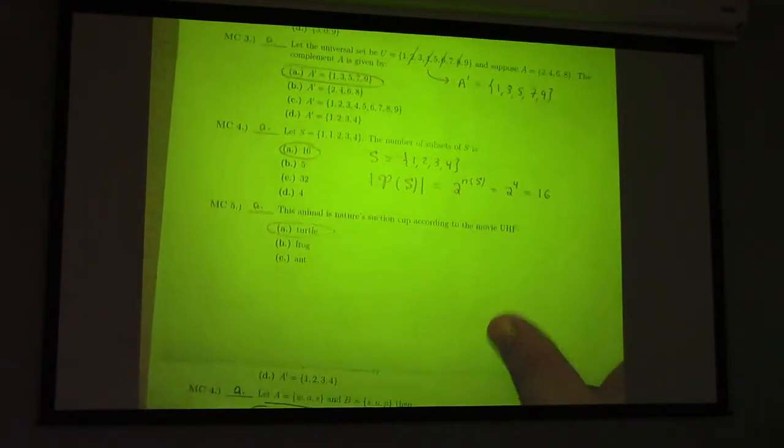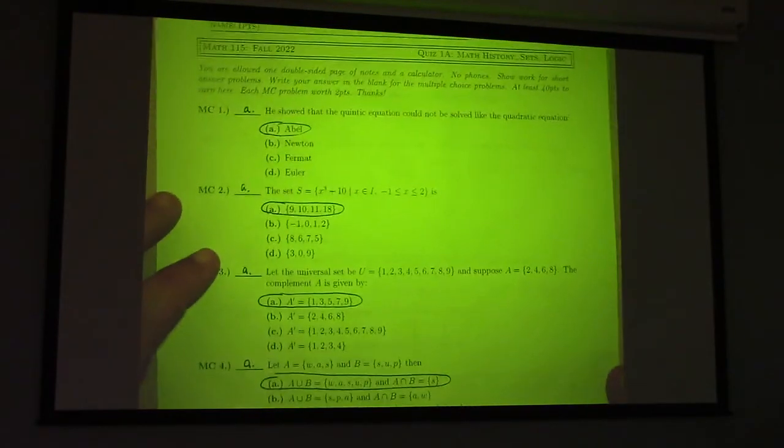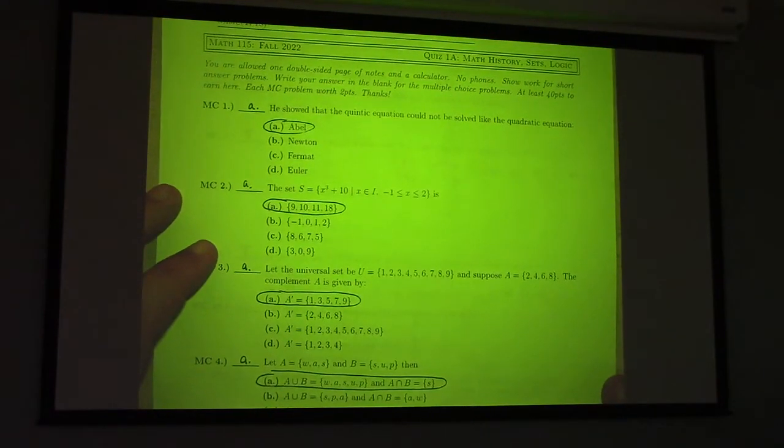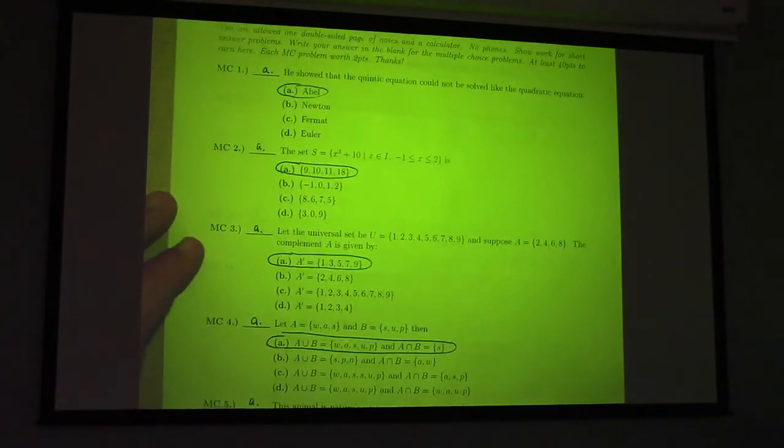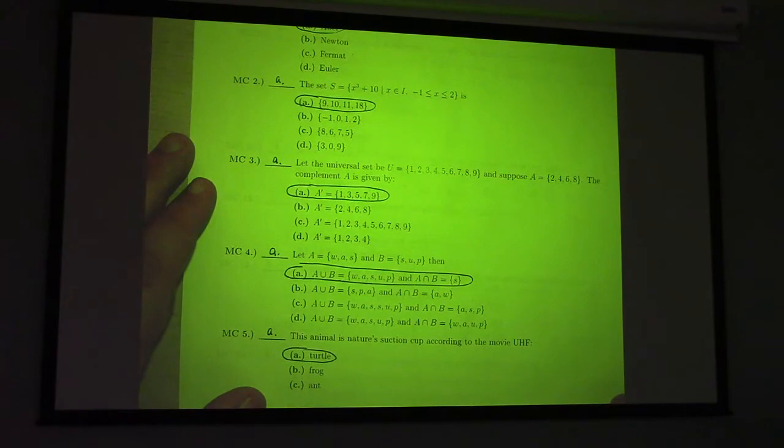Okay, so here's version 2. So, some of it's the same. Still Abel, still 9, 10, 11, 18. The universal set problem's the same, right?